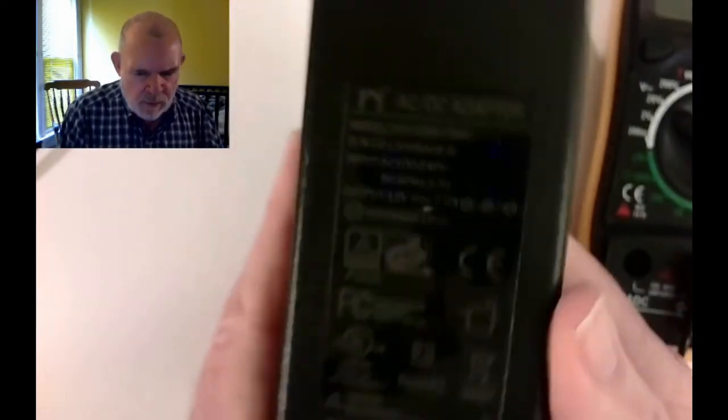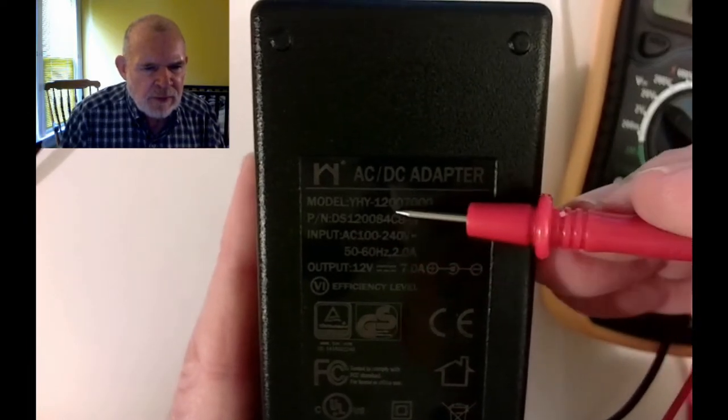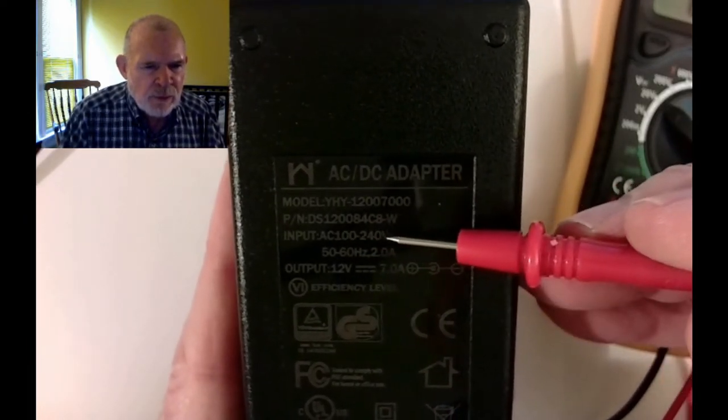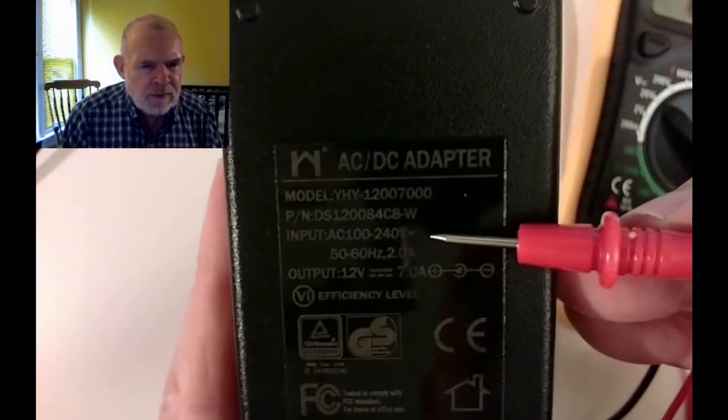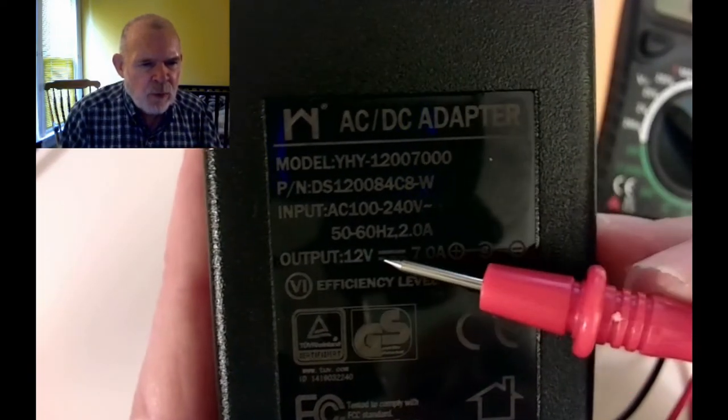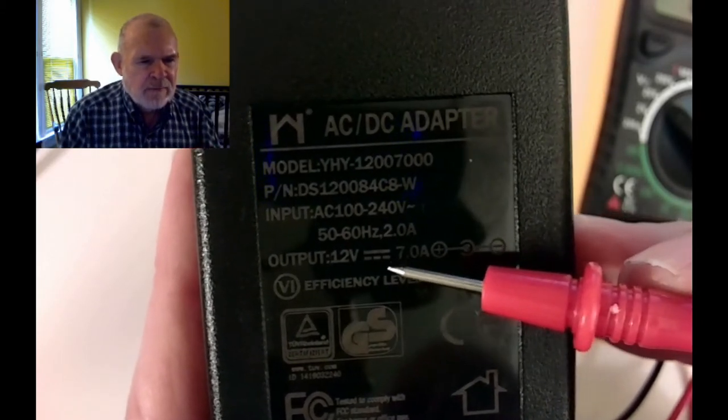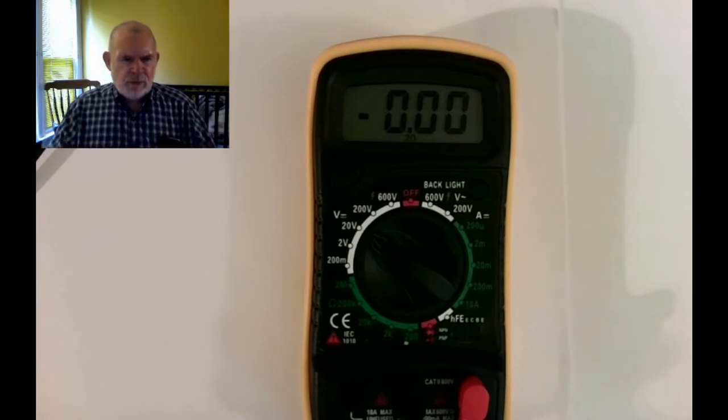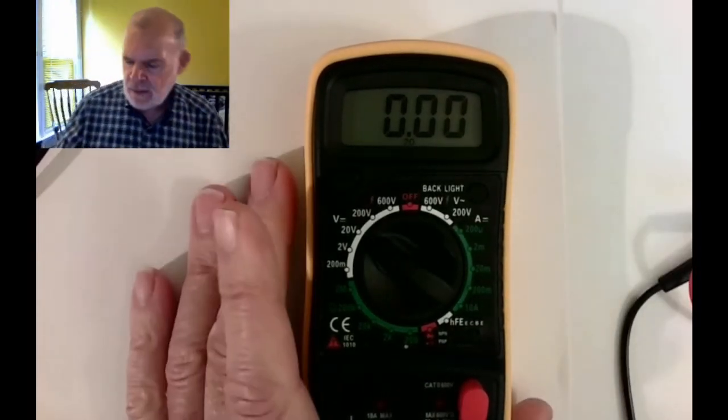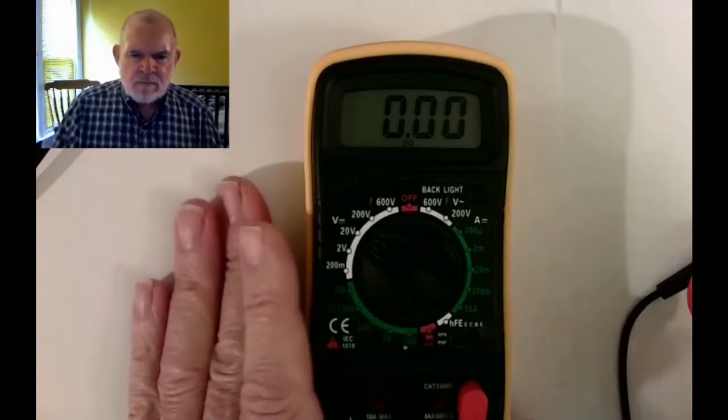I just want to show you that those symbols are used elsewhere. Here's a power supply to a computer. Notice it says the input to this device is 100 to 240 volts with the little squiggle for alternating current, but its output is 12 volts with a line with dots under it. That's the symbol used for direct current. Learn to recognize those because you'll see them on the back of products and other places where they mention voltage.